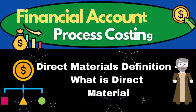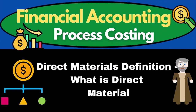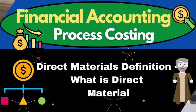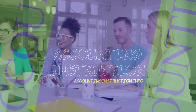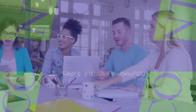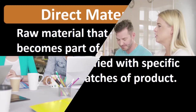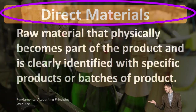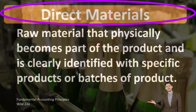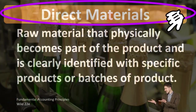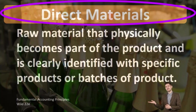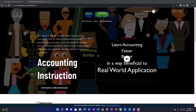Hello, in this lecture we will define direct materials. According to Fundamental Accounting Principles, Wild 22nd Edition, the definition of direct materials is raw material that physically becomes part of the product and is clearly identified with specific products or batches of products.